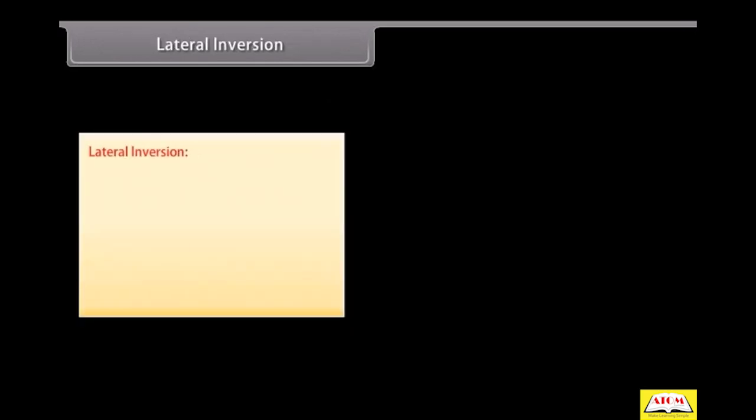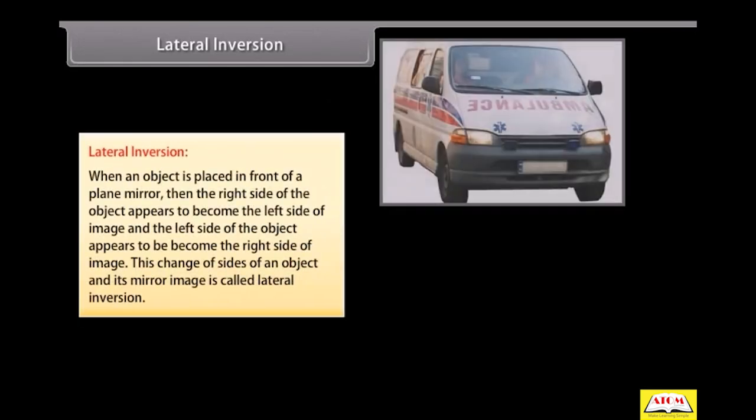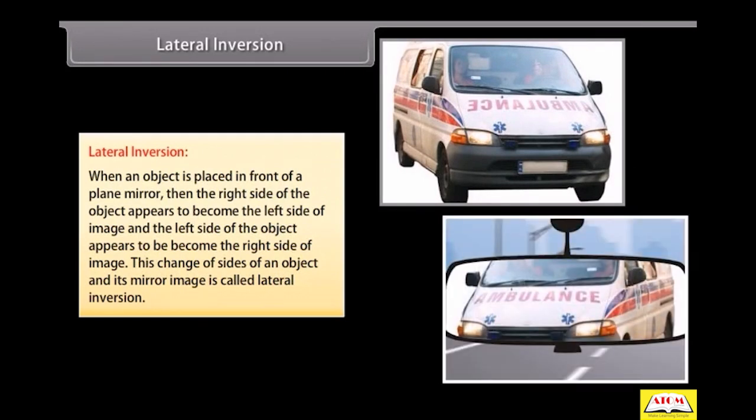Lateral inversion. When an object is placed in front of a plane mirror, then the right side of the object appears to become the left side of image and the left side of the object appears to become the right side of image. This change of sides of an object and its mirror image is called lateral inversion.